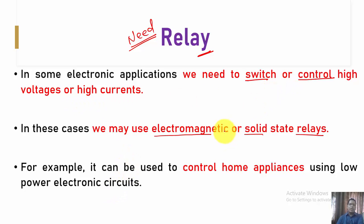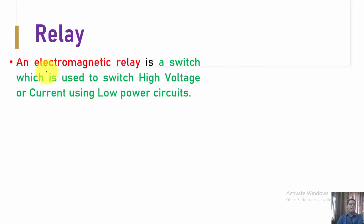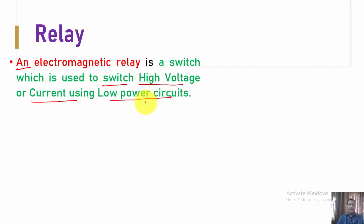Whenever we are going to deal with control of some appliances which may run on low or high voltages or currents, in that case we make use of an electromagnetic switch. A relay is nothing but a simple electromagnetic switch, which is used to switch high voltage or high current using a low-power circuit.